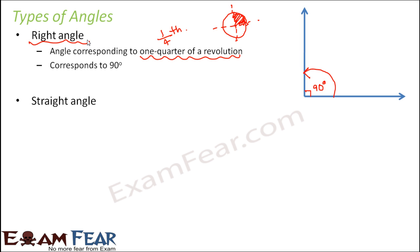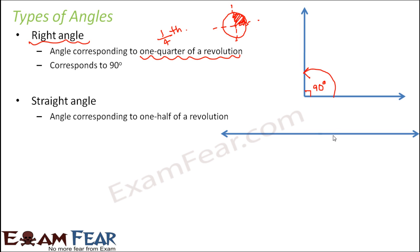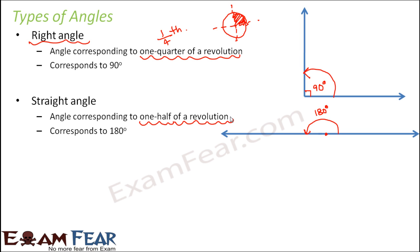Similarly, we have something called a straight angle — straight because this angle is formed on a straight line. This angle is 180 degrees, so the name given to the angle corresponding to 180 degrees is straight angle, because it forms a straight line. Now, how much of a revolution is 180 degrees? It is one half of a revolution. So one half of a revolution corresponds to a straight angle, that is 180 degrees.